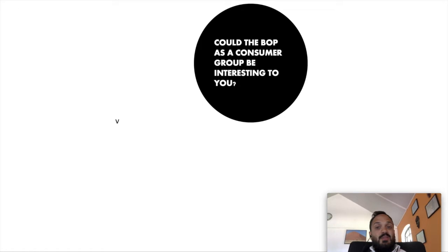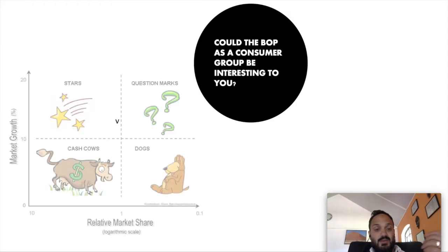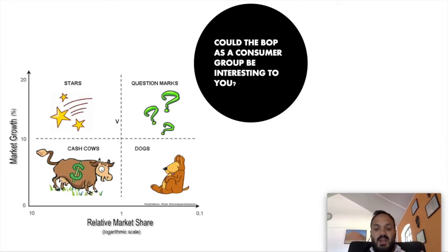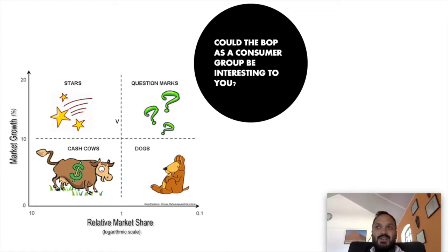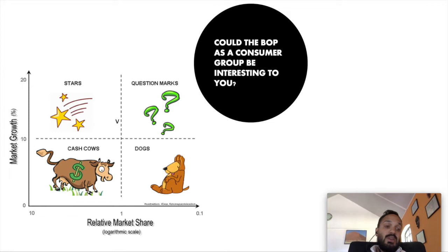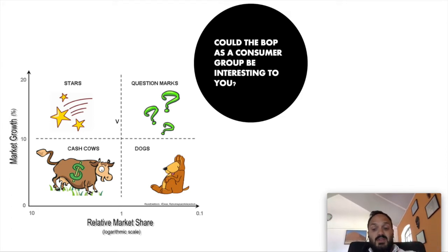Could the BOP as a consumer group be interesting to you? This ties in quite nicely to the Boston Consulting Group matrix, which you've covered in lecture one or two. It's really about trying to see if that lower income market fits into one of those four matrix categories. Try to reflect on that in the articles you're writing — how that works and comes together.